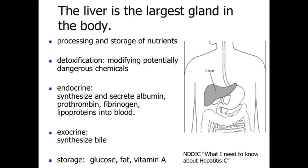The liver is going to have an endocrine function in that it's going to be involved with secreting a lot of factors that are taken up by the bloodstream, such as albumin, prothrombin, fibrinogen, and lipoproteins. Additionally, the exocrine function of the liver is involved with synthesizing bile to assist in the digestion of fats and lipids. In terms of storage of nutrients, it's going to store a lot of glucose, a lot of fat, as well as being a good location for the storage of vitamin A within the body.